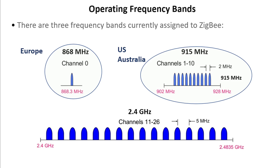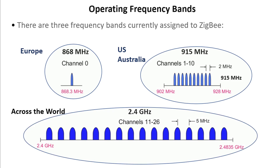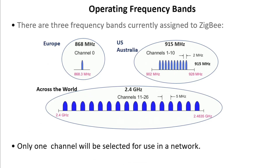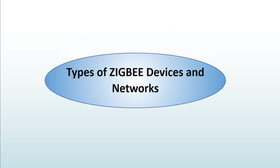The second band is 915 MHz, which includes 10 channels and is used in the US and Australia. The third band is 2.4 GHz, available across the world. Once a Zigbee network is established, only one channel will be selected for that entire network — just one channel.